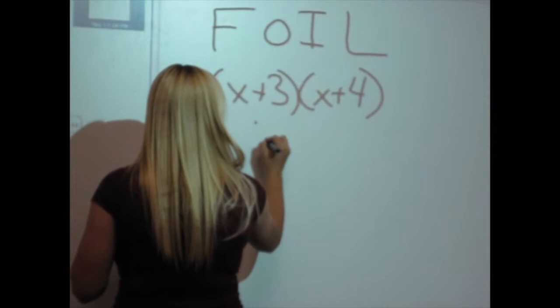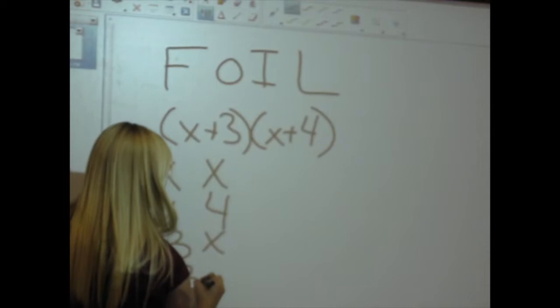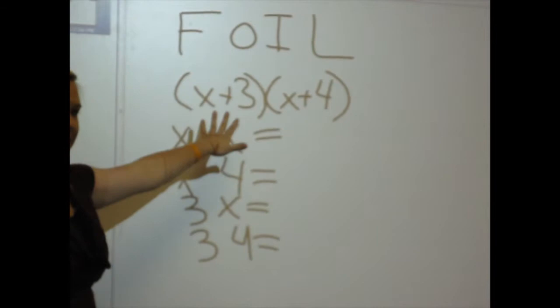First would be the first variable in each of the parentheses — so the two X's. Outside would be the X and the 4. Inside would be the 3 and the X. And then the last would be the 3 and the 4. Since we're multiplying them together, you've got to multiply these together.